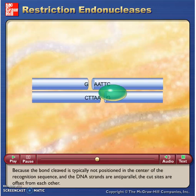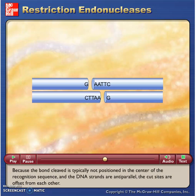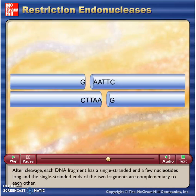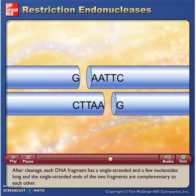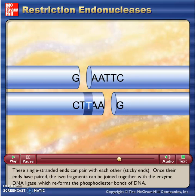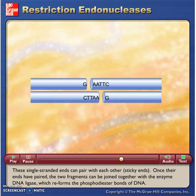Because the bond cleaved is typically not positioned in the center of the recognition sequence and the DNA strands are anti-parallel, the cut sites are offset from each other. After cleavage, each DNA fragment has a single-stranded end a few nucleotides long, and the single-stranded ends of the two fragments are complementary to each other. These single-stranded ends can pair with each other — sticky ends.